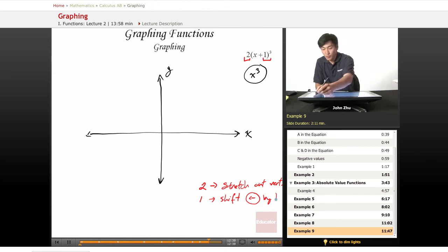If we mark those points, here's 1. We shift the x cubed graph over by 1, and we also stretch it by 2.